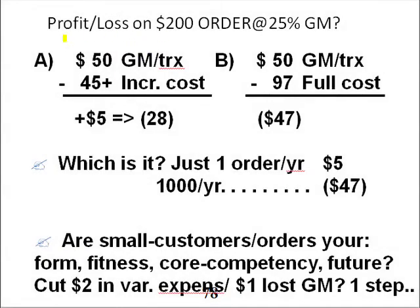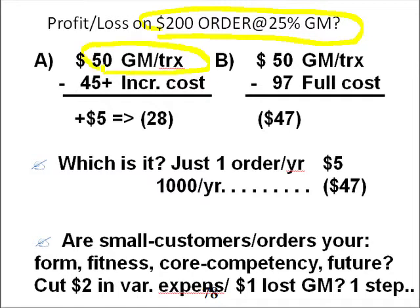In this slide, this just summarizes what I concluded in the previous slide, which is that if we had one more order for $200, 25% margin, we'd get $50 in gross margin in that transaction. On a strictly generous-as-we-could-be-for-the-customer basis, we might say it's $45 in incremental costs. We made $5 to contribute to the bottom line.